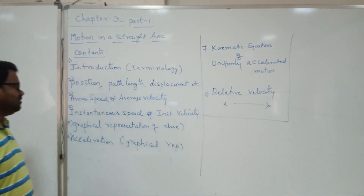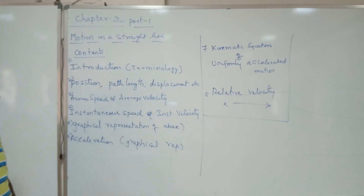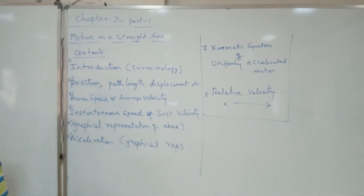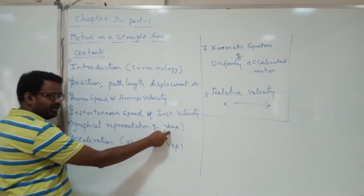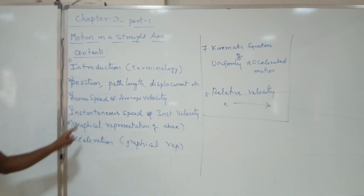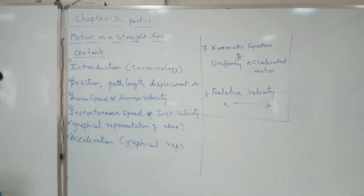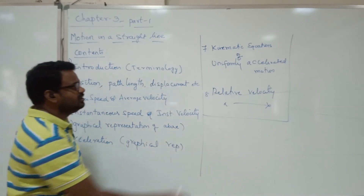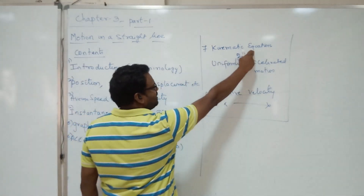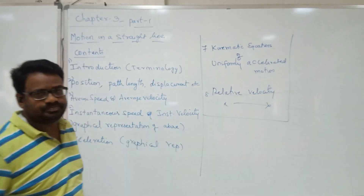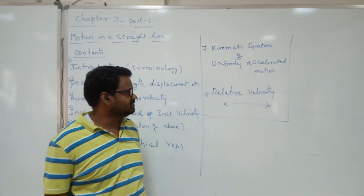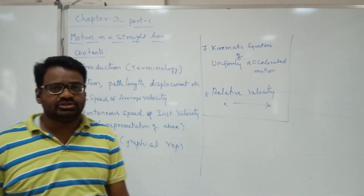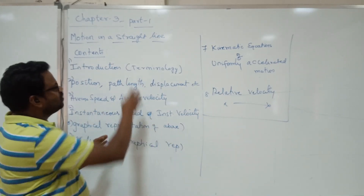Further topics include average speed, average velocity, instantaneous speed, and instantaneous velocity, along with their graphical representations. After that comes graphical representation of acceleration, then kinematic equations of uniformly accelerated motion, and finally topics related to relative velocity.